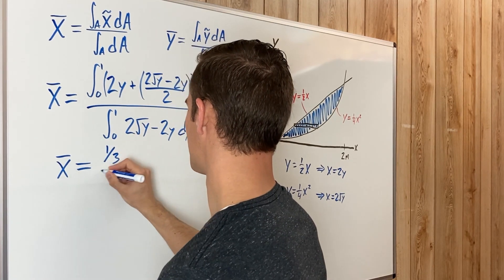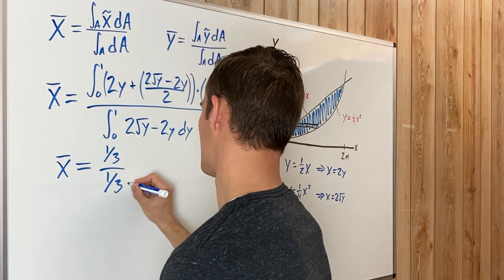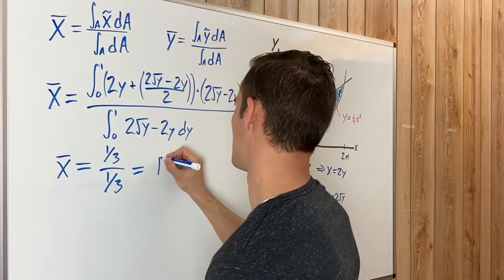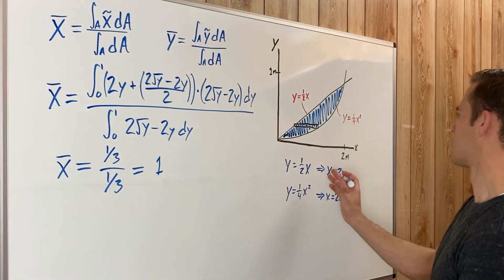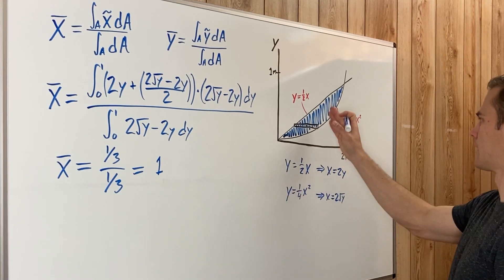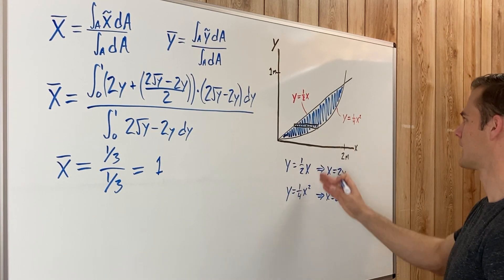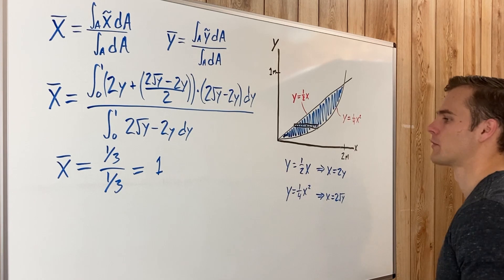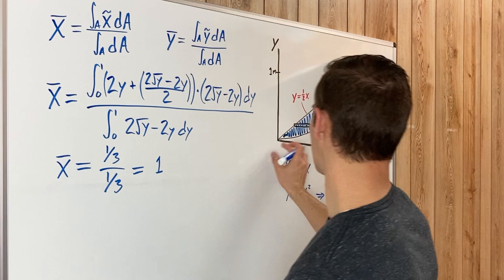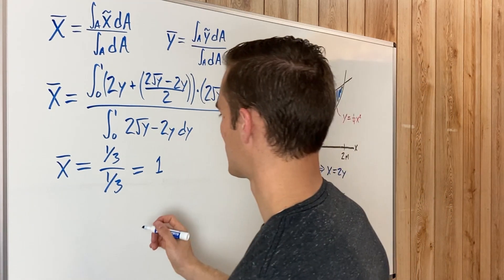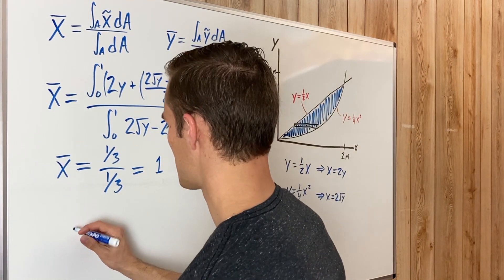Which equals one. And that makes sense, that it kind of looks like the center of mass might be around the middle with respect to X. With Y it's not quite in the center, but for X bar it's one meter away from the Y axis. So with Y bar.